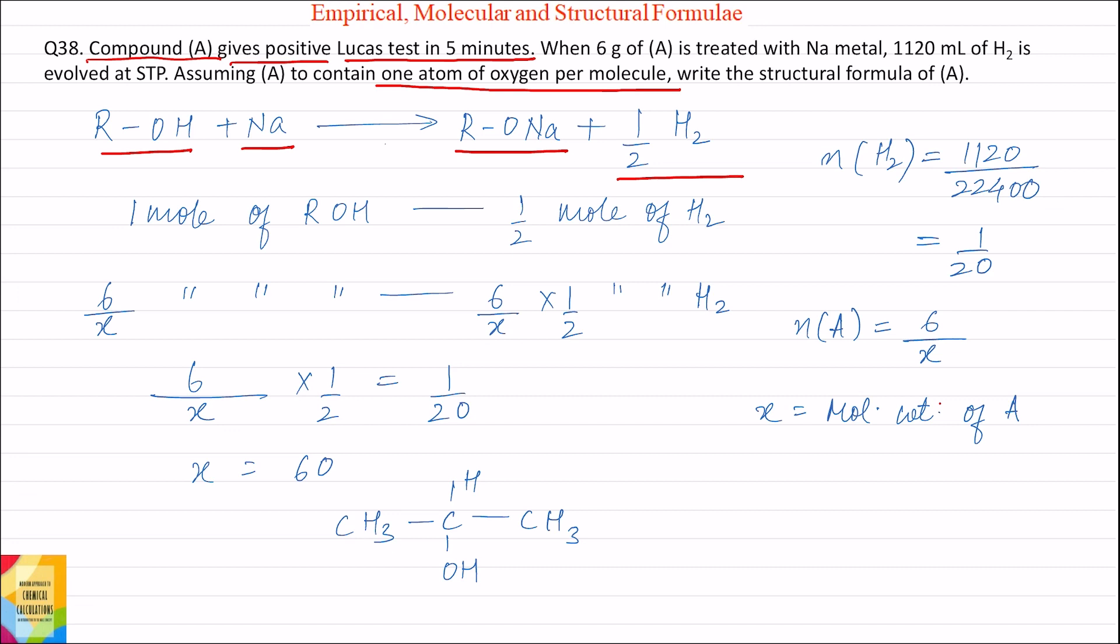Moles of hydrogen evolved equals volume of hydrogen divided by molar volume. Volume of hydrogen evolved divided by molar volume of hydrogen equals 1/20 moles. So moles of hydrogen evolved is 1/20 moles.